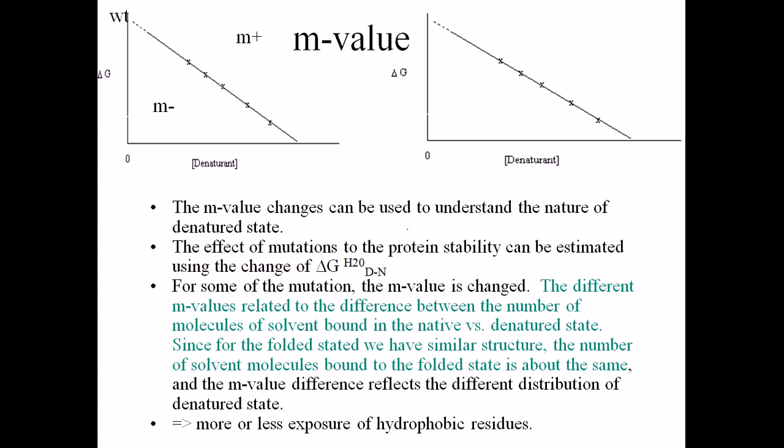So that means the different M-value relates to the difference between the number of molecules of solvent bound in its native versus denatured state. Since for the folded state, we have similar structure, the number of solvent molecules bound to the folded state is about the same.